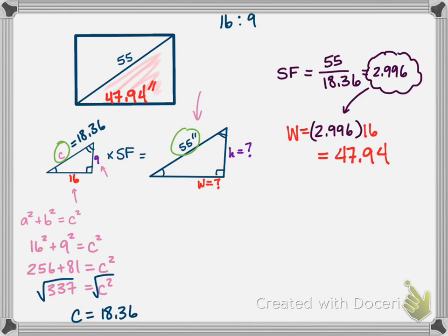So now we just do the same thing with the height. Our height, we know that again we multiply our scale factor. So we go 2.996, and we're multiplying that times 9, and that gives us 26.96. So this is 26.96 inches. So now I know what kind of a space I need for my TV. If I needed to know the area, like some of the questions on the worksheet ask for your area, then you just take those two and you multiply them, because now we're just dealing with a rectangle.